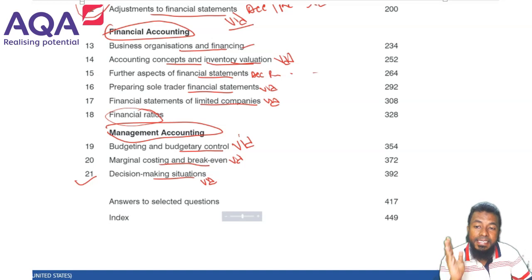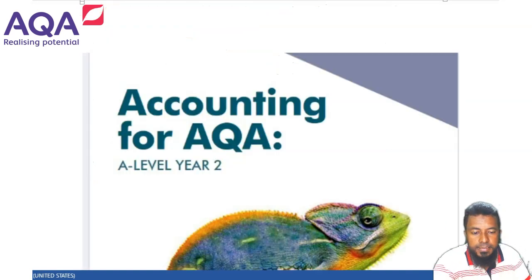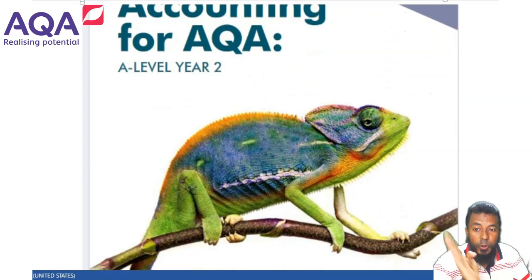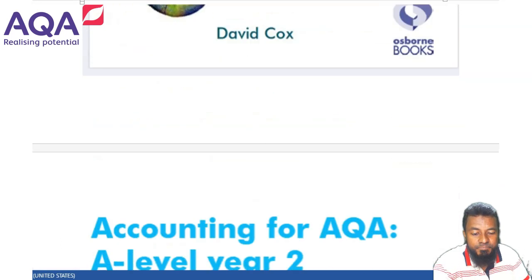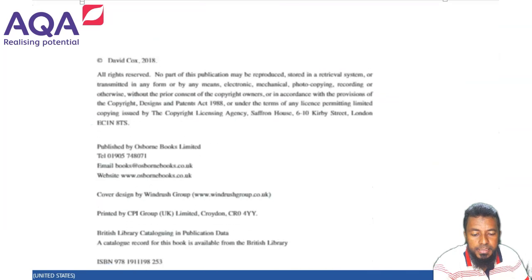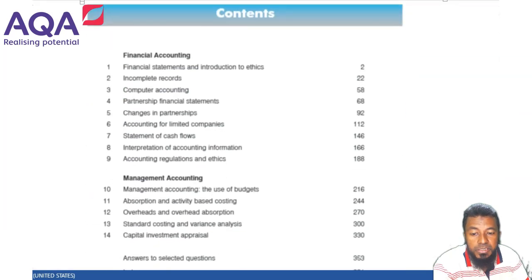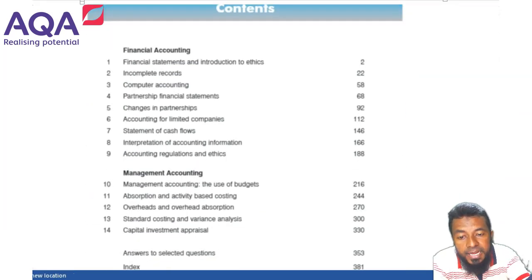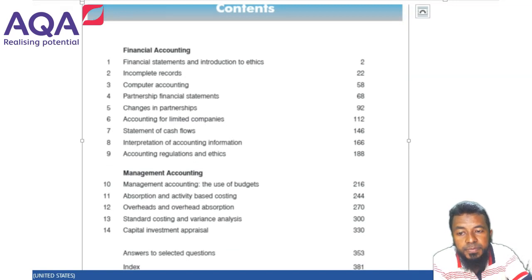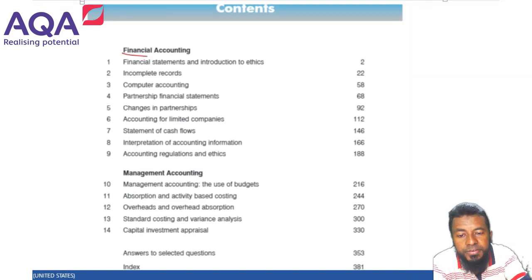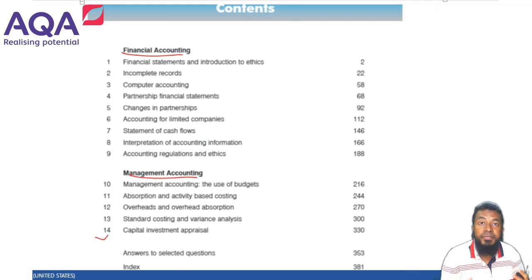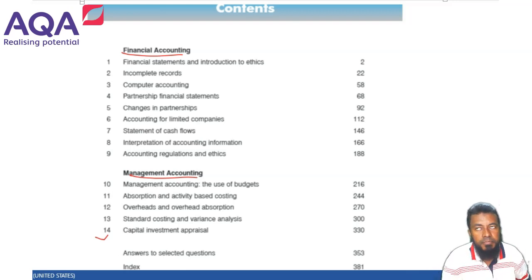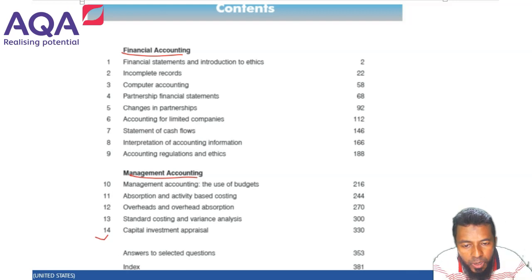Let's jump into A2 now for the second-year students. The book looks similar on screen — again by David Cox from Osborne Books. The contents are on screen: financial accounting and management accounting. There are only 14 chapters here, but this is heavy — second year is about twice as heavy as first year. Topics include financial statements and an introduction to ethics.